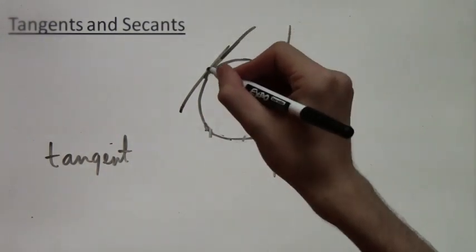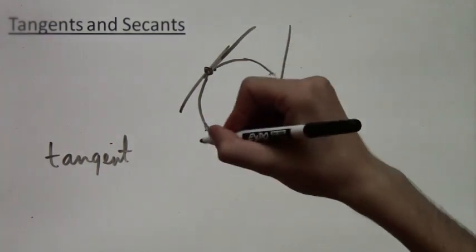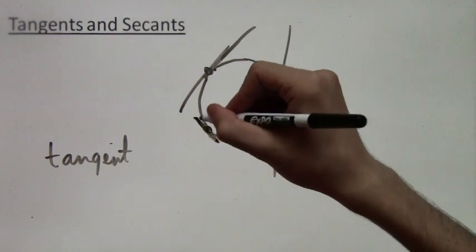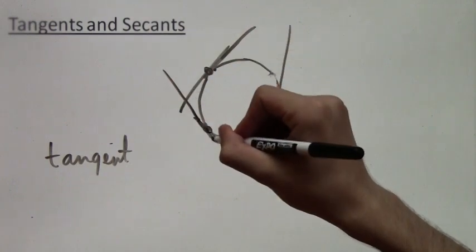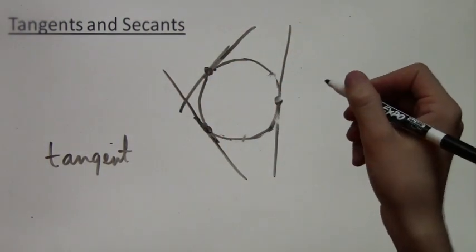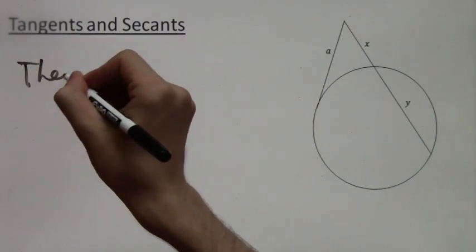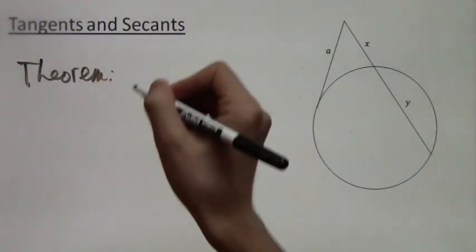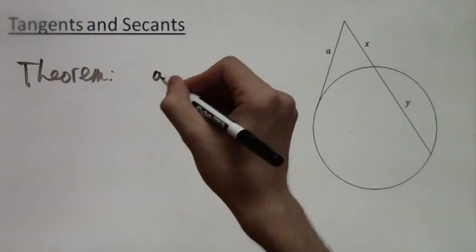So what we're going to learn is a very interesting fact about what happens when a tangent line intersects a secant line. So here's this drawing. We have the tangent of length a, and then we have the secant of length x plus y, with x on the outside and y on the inside.